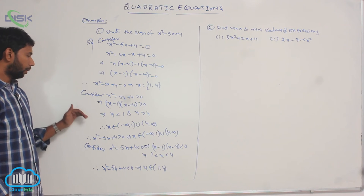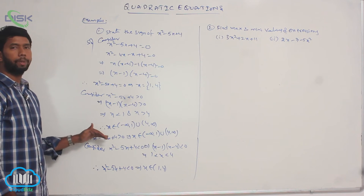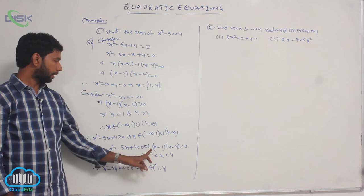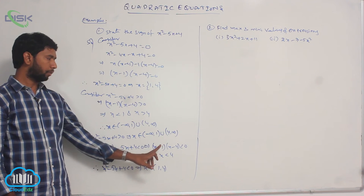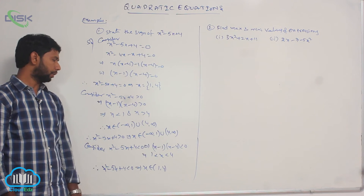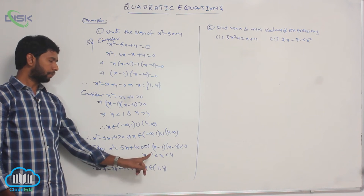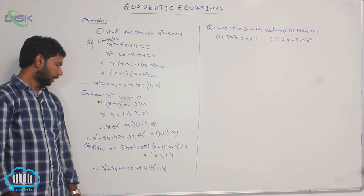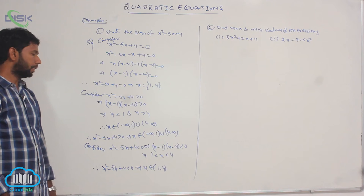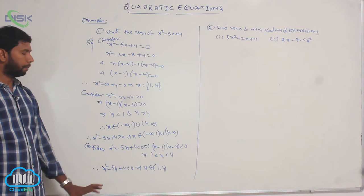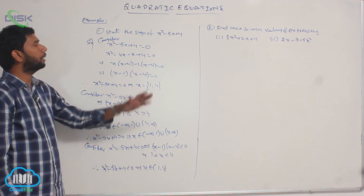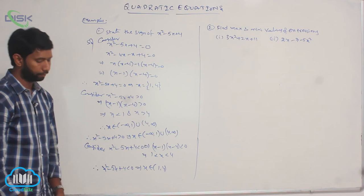For which interval is the expression negative? That means (x - 1)(x - 4) < 0, which implies 1 < x < 4. Therefore the expression is negative when x belongs to (1, 4), which represents the complete sign of the expression.